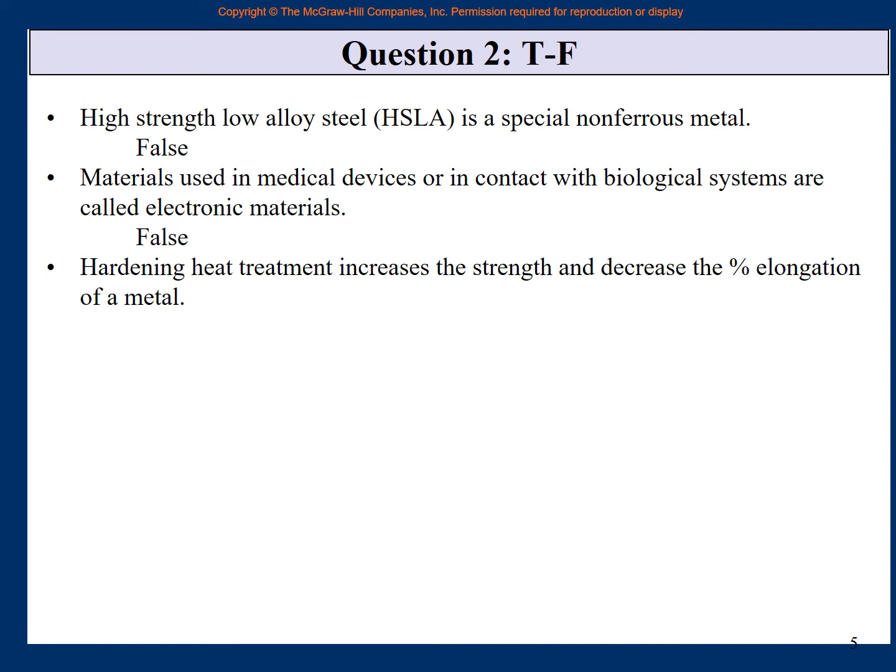Hardening heat treatment increases the strength and decreases the percent elongation of a metal. When you harden a material, obviously the strength increases. Strength and hardness go together. And when the material is harder, then its ductility is smaller. So percent elongation is ductility. So yes, when you harden the material, the strength increases and the ductility or the percent elongation decreases. So it must be true.